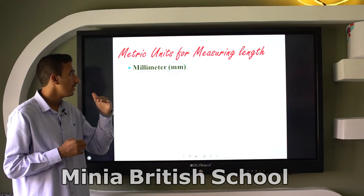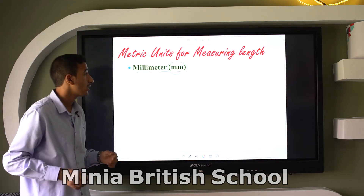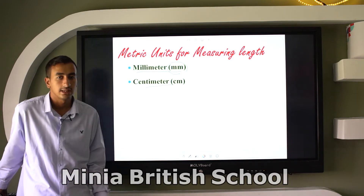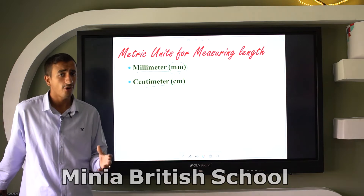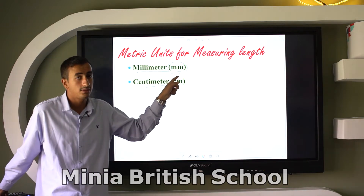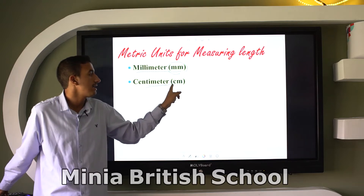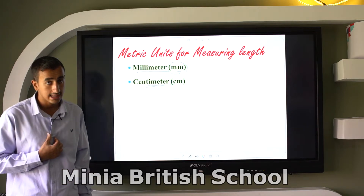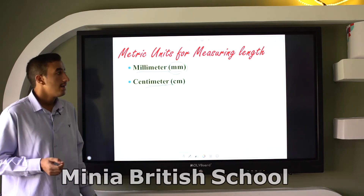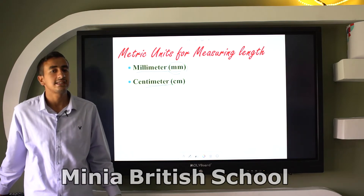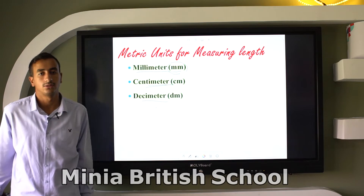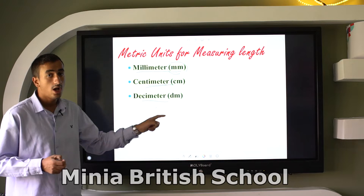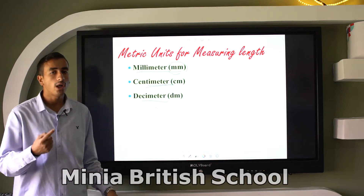The next unit, bigger than millimeter, is centimeter. If I have 10 millimeters, I can exchange that for one centimeter. After that, the next unit is called decimeter. Ten centimeters can be exchanged for one decimeter.